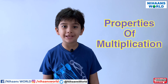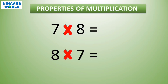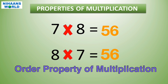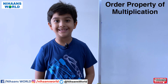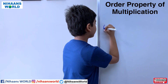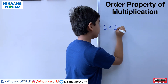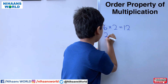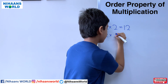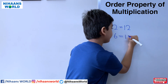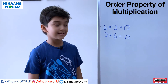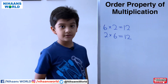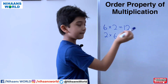Friends, let's learn properties of multiplication. Even if the order of numbers is changed, the product of the numbers remains unchanged. This is called the order property of multiplication. For example, 6 multiplied by 2 is equal to 12, and 2 multiplied by 6 is also equal to 12. The order of numbers is changed, but the result is the same.